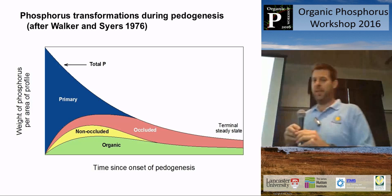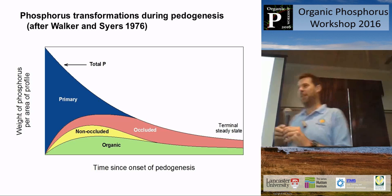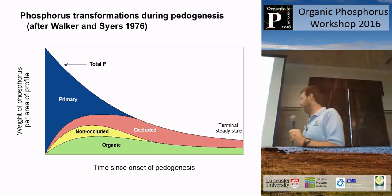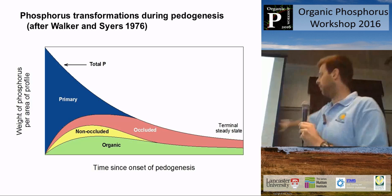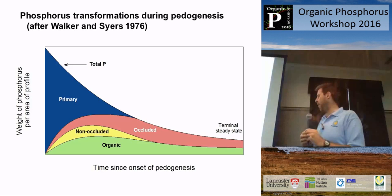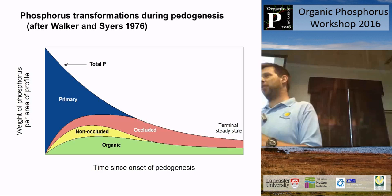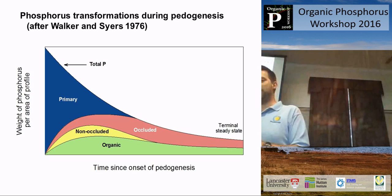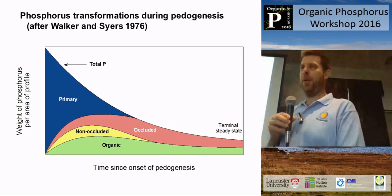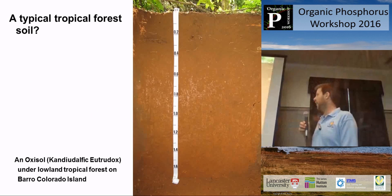We've seen a few versions of the classic Walker and Syers model of phosphorus transformations during pedogenesis. The point I want to make with this model is that in old soils — the soils on the right of this diagram — phosphorus is dominated by organic phosphorus and by residual phosphorus occluded within secondary minerals. Because most soils in tropical forests are old and strongly weathered, having not been glaciated for perhaps millions of years, organic phosphorus is a key component of the phosphorus cycle in making phosphorus available to organisms.